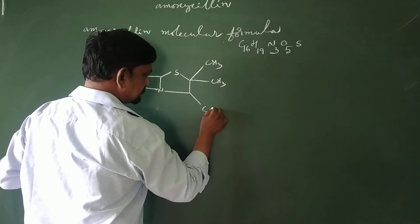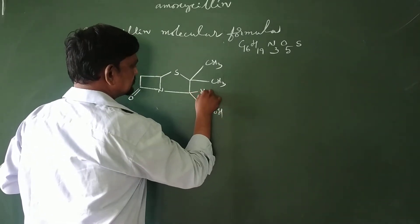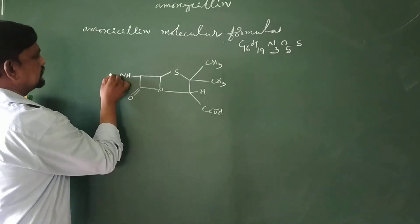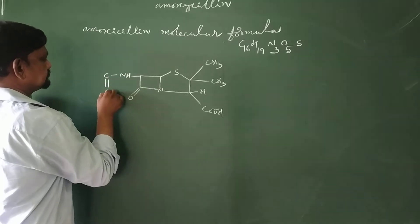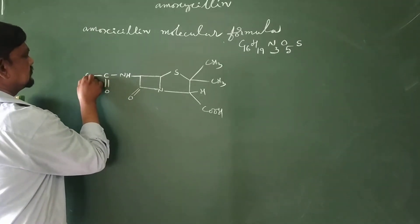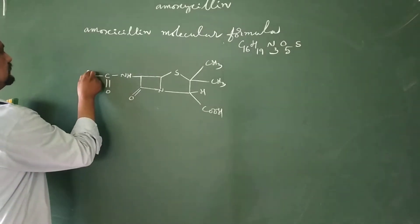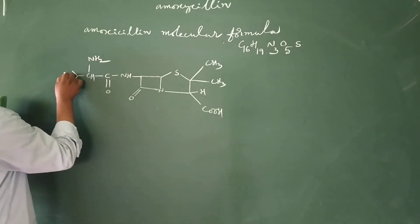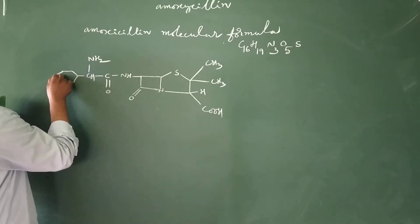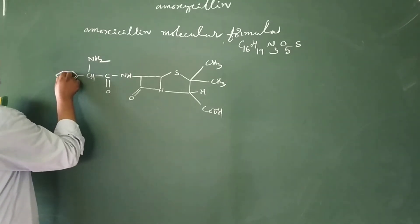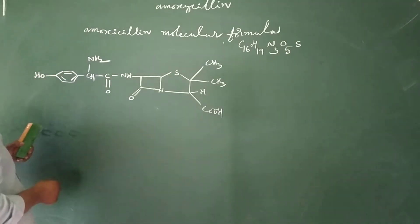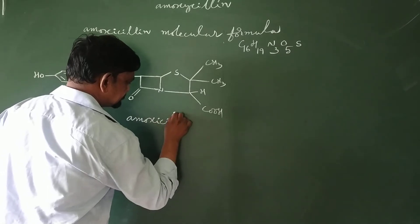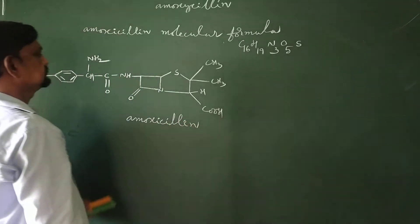Here is the carboxylic acid group. Also hydrogen is there. Here is the NH amino group and the carbonyl group. In this position is an amino group, and in this position is a phenyl group attached to a hydroxy group. This is the amoxicillin structure.